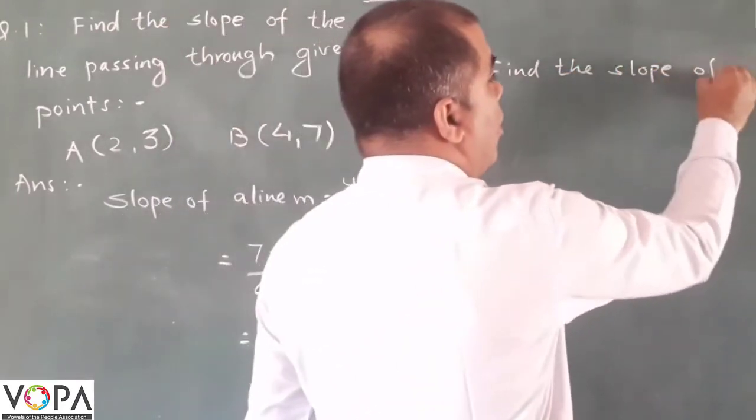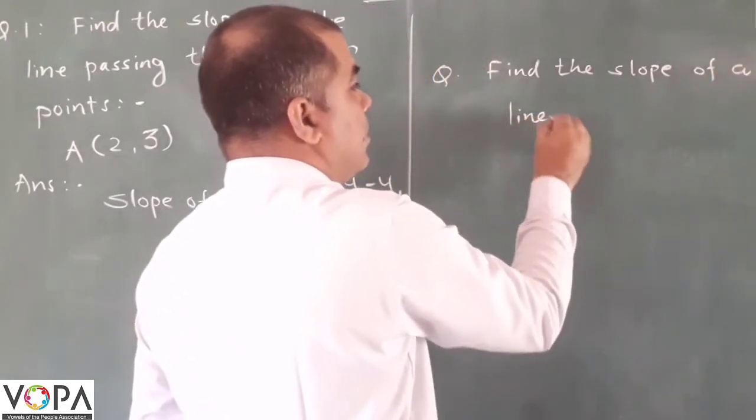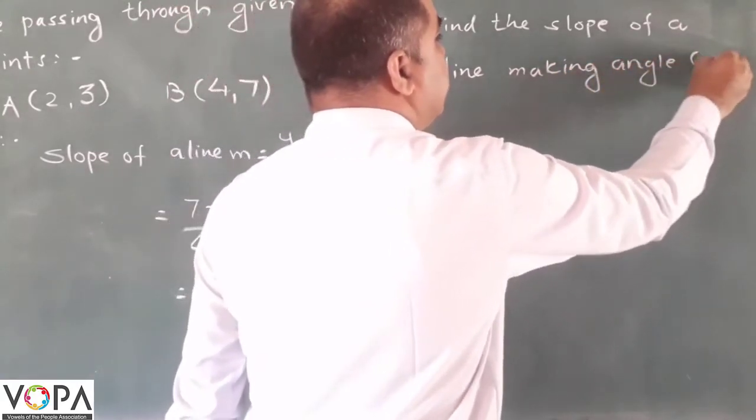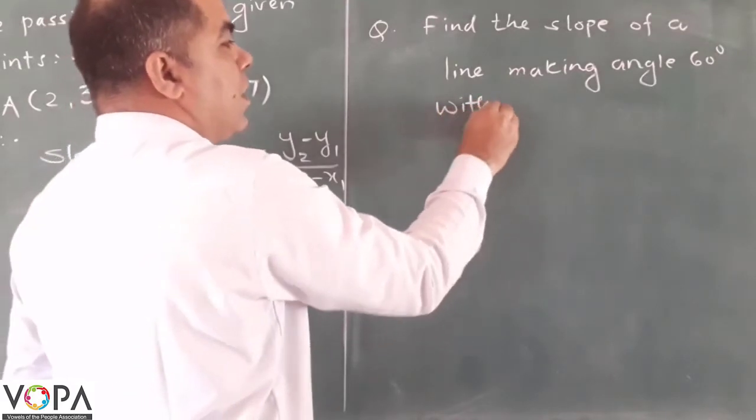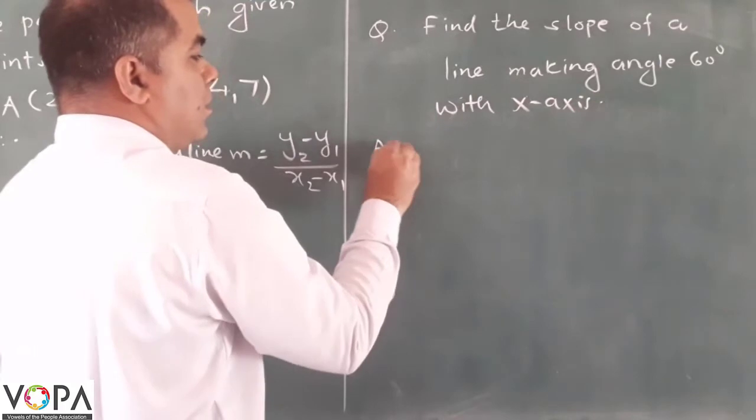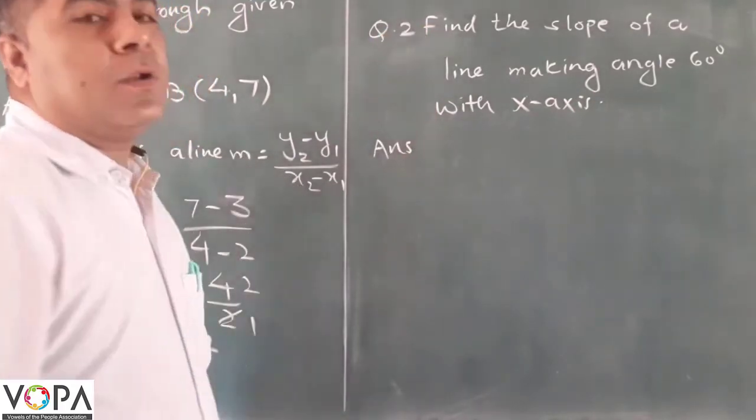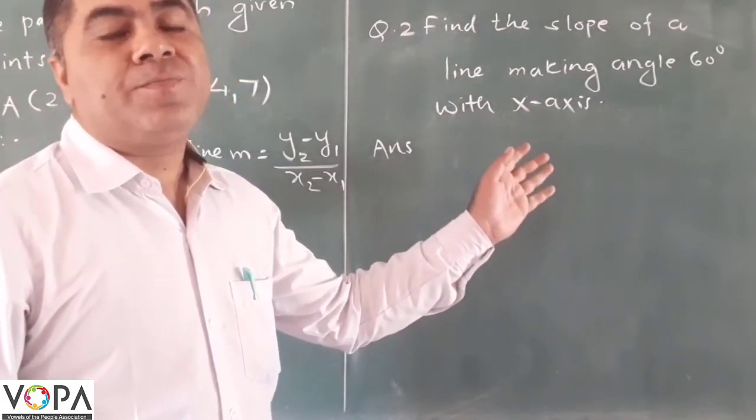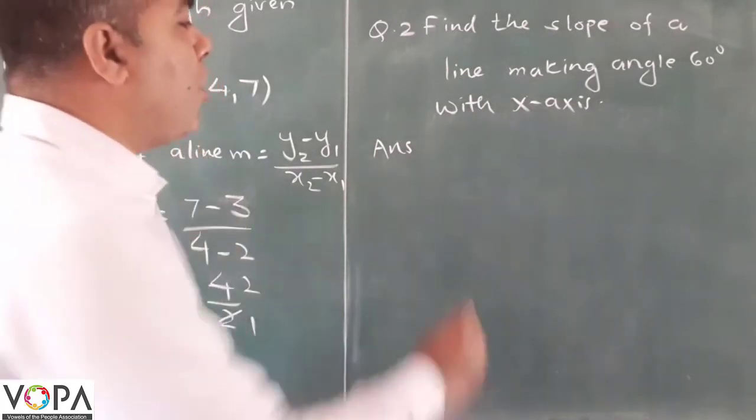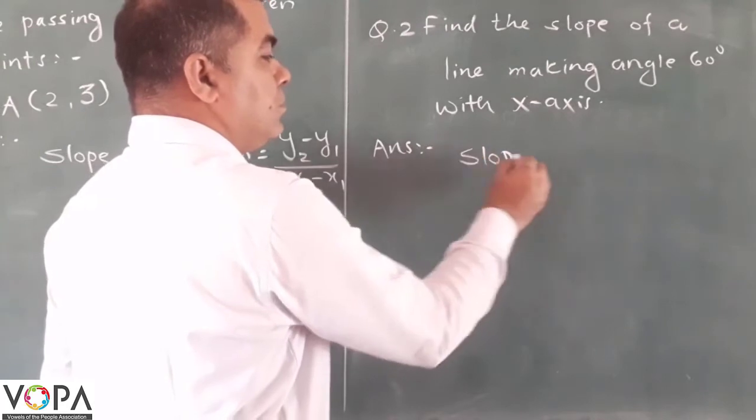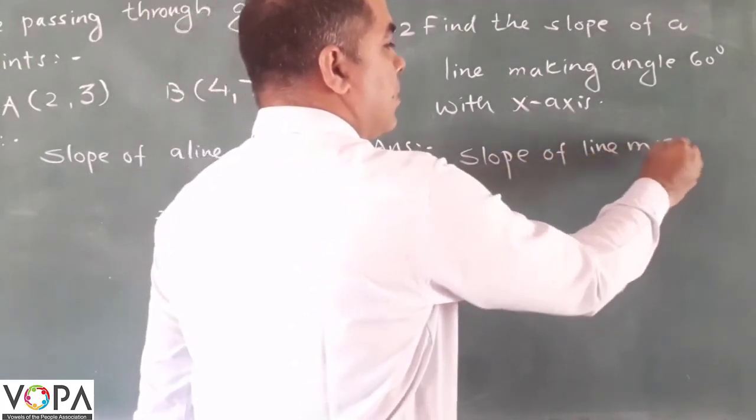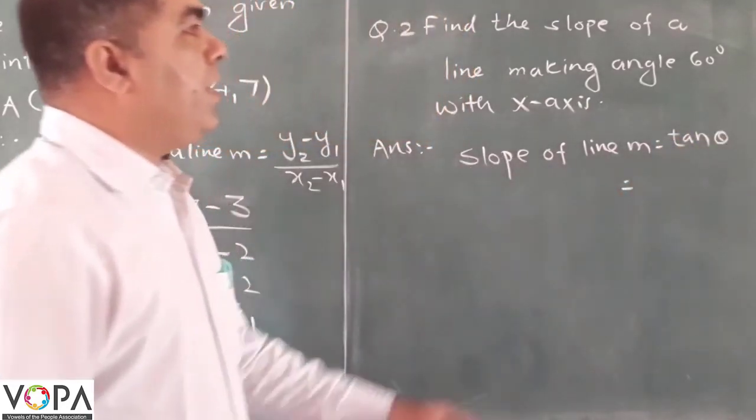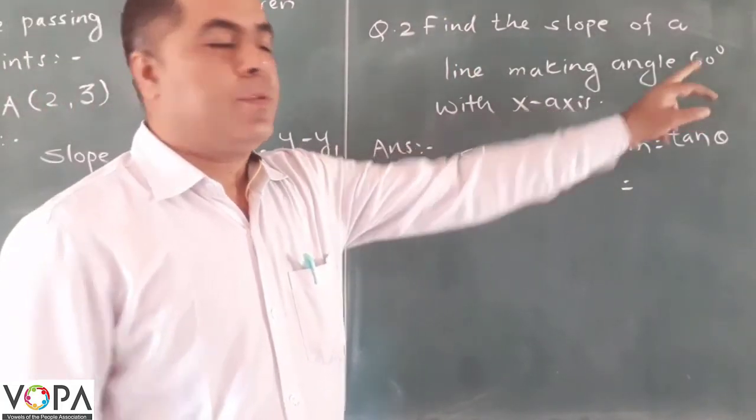Recall the formula: when the line makes an angle theta with the x-axis, the slope of the line is tan theta. Now here, theta is 60 degrees, therefore the slope will be tan 60 degrees.